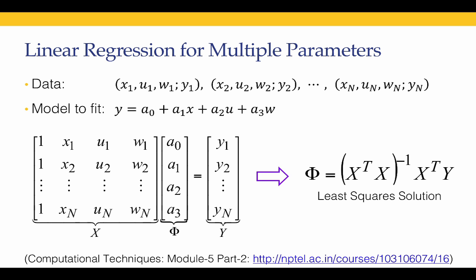In this case, for example, we have four parameters a0, a1, a2, and a3. When we have data in terms of x1, u1, and w1 as the independent variables and y1 as the dependent variable — this is the first data point — the second data point is x2, u2, w2, and y2, and so on up to the nth data point xn, un, wn, and yn. We want a model fit of the form y equal to a0 plus a1x plus a2u plus a3w.